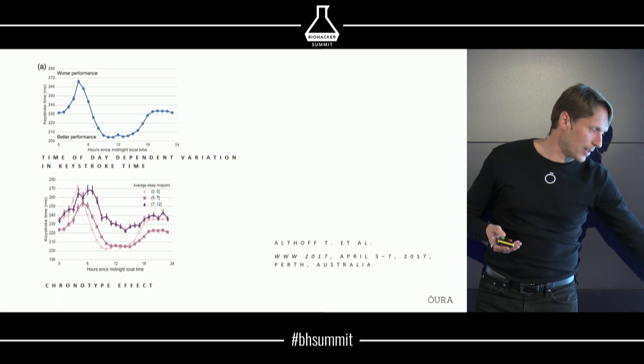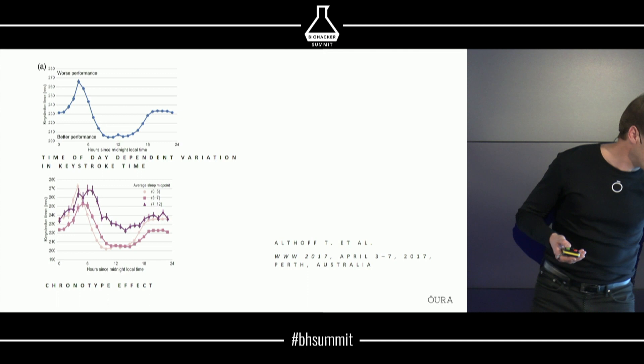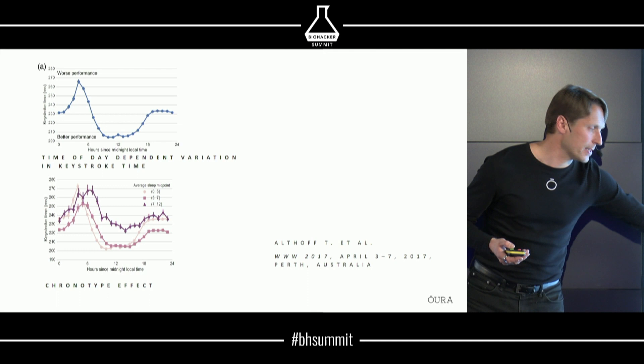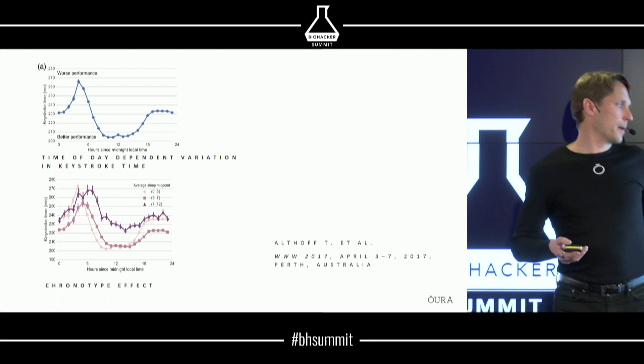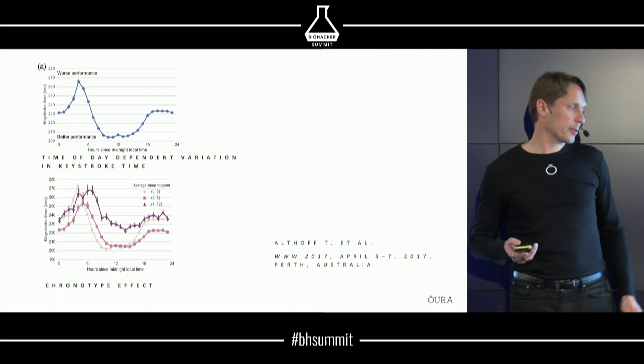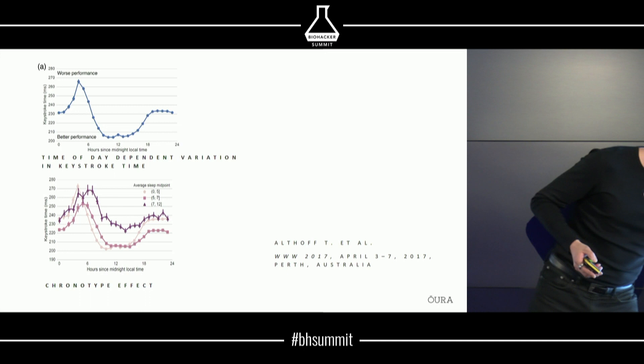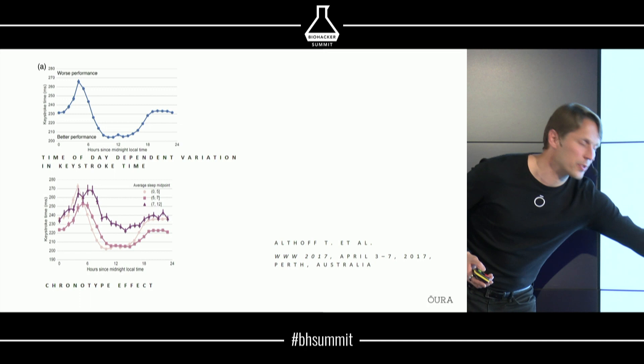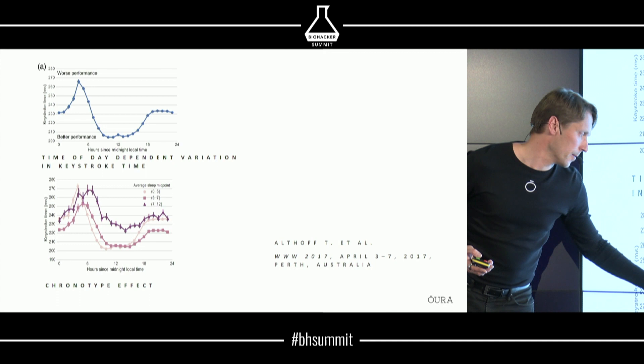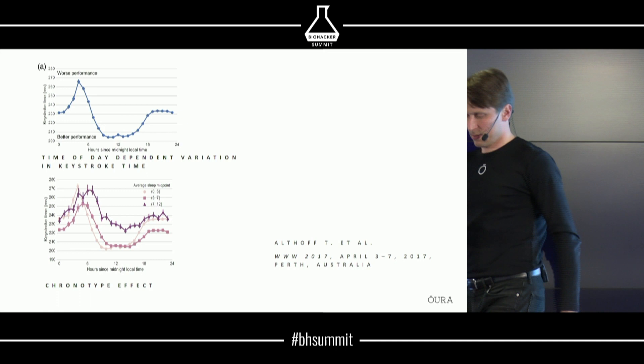All chronotypes share the basic pattern that daytime performance is better than nighttime. Morning people have their peak performance earlier than intermediate types, and late evening-type people have lower performance throughout the day. What's significant is that morning-type people have a steep rise and a steep decline in performance in the late afternoon. Evening-type people don't feel the difference between late afternoon and night, making it especially difficult for them to go to bed early enough.